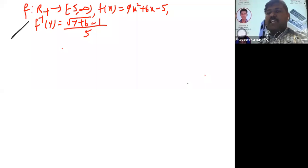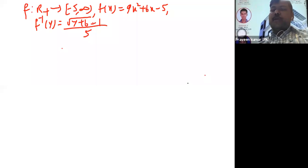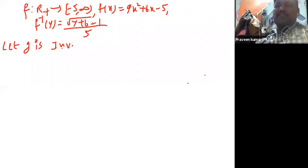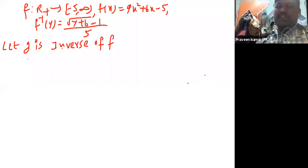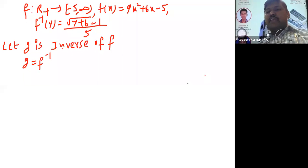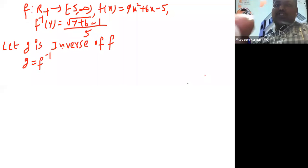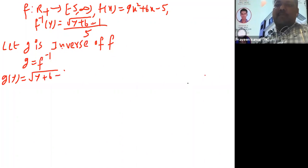Given f inverse of 5, whenever they give f inverse of 5 we can start the problem from: let g be the inverse of f, that means g is equal to f inverse. Because in the given question they've only given f inverse of 5, that's why I started the problem from let g be inverse of f. Now g of y is equal to root of y plus 6 minus 1 by 3.